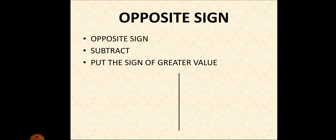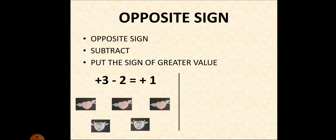Next, the last rule: opposite sign. In opposite sign, we have to subtract the numerical values, and after that we put the sign of the greater value — whose value is greater, that sign. So for plus three minus two: there are three positives and two negatives. The number of positives is more, so in our answer we'll get a positive. Subtracting three and two, we get one. So here we have three heroes with two villains — each hero cancels with each villain, and remaining is only one hero. As a hero is positive, remaining is only plus one.